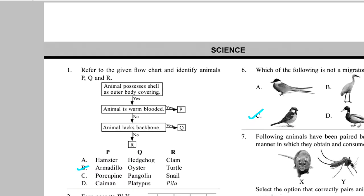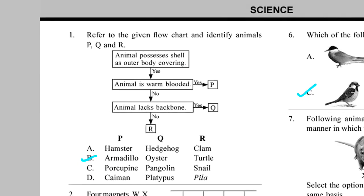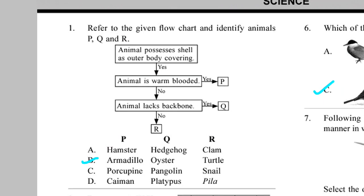Refer to the given flow chart and identify animals P, Q and R. Look at the flow chart carefully. Correct answer is option B.